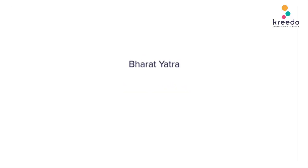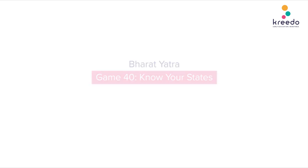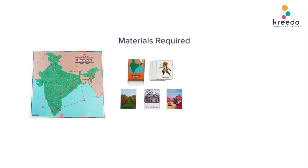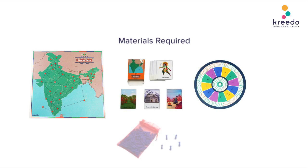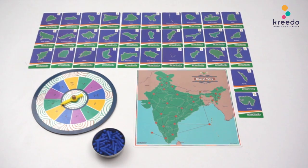Bharat Yatra, Game 40: Know Your States. Materials required: Bharat Yatra chart, state card, number roulette, skittles, bowl. Objective: to identify the name of the states of India and associate the cultural elements to each state.